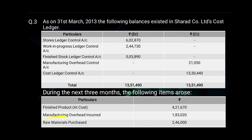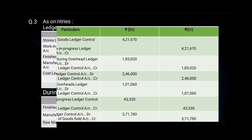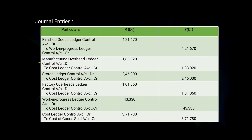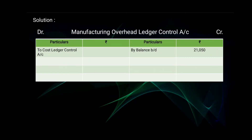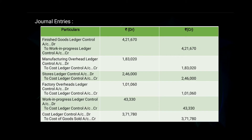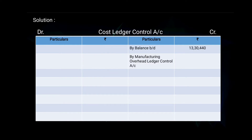Next, manufacturing overheads incurred — 1 lakh 83,020. The first effect is given in Manufacturing Overhead Ledger Control Account as 'to Cost Ledger Control Account — 1 lakh 83,020.' The second effect is given in Cost Ledger Control Account as 'by Manufacturing Overhead Ledger Control Account — 1 lakh 83,020.'